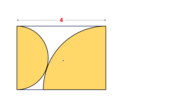We have a rectangle. The length of this rectangle is 4 units and there is a semicircle — the diameter of this semicircle is the same as the width of this rectangle. There is also a quarter circle, and the radius of this quarter circle is the same as the width of this rectangle, and these two circles touch each other.